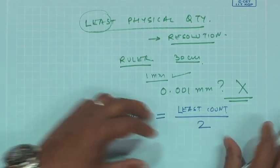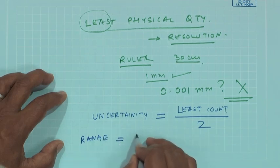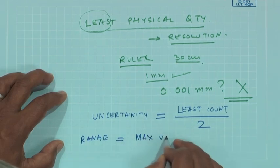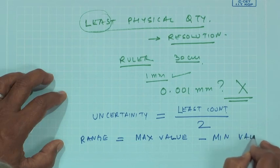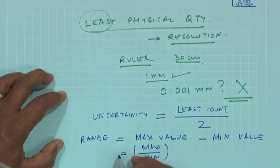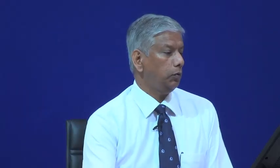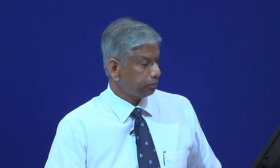The range is the maximum value minus the minimum value, or in logarithmic scale it is the max divided by the minimum value. We will talk about hysteresis, impedance, accuracy, precision, and dynamic characteristics in subsequent classes — dynamic characteristics being very important for transducers used in condition based monitoring.